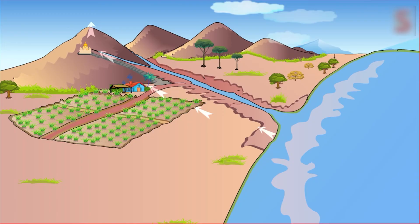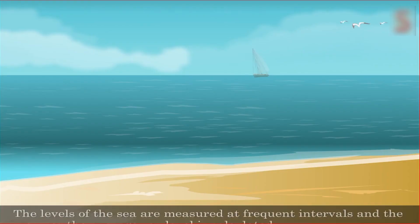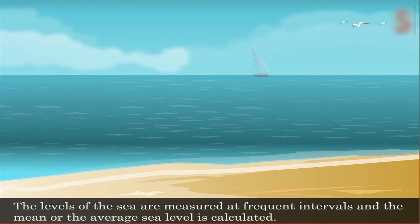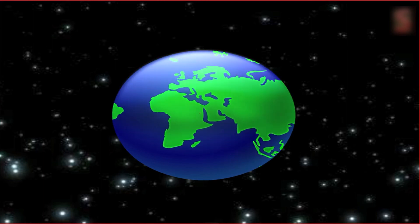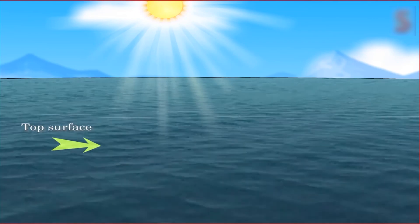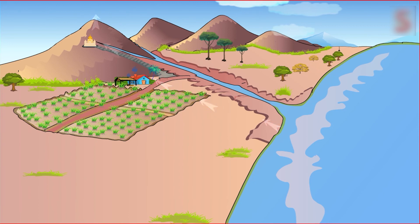Students, now let's have a look at how heights are measured on the land. As we all know, the levels of the sea keep changing with low tides and high tides. In such cases, the levels of the sea are measured at frequent intervals and the mean or average sea level is calculated. So the scientists have come up with the Mean Sea Level, MSL, that is used to calculate heights from the sea level. But why do you think sea levels are used to calculate heights on the land? As all the seas on the earth are connected to each other, the top surface or the sea level all over the world is taken to be the same. Hence, sea level stands as the basis for calculating heights.